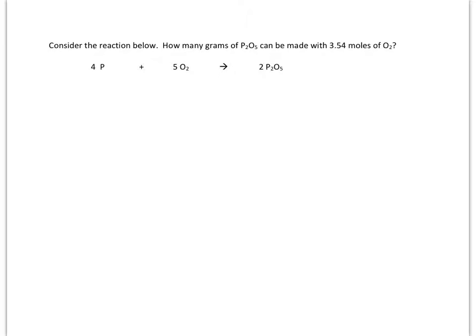So again, the first thing you want to do is map it. So it says, how many grams of P₂O₅ can be made? So we say, where is that? That's P₂O₅. I want this for my final answer. That's where I'm going. With 3.54 moles of O₂. So O₂ is going to be under O₂, but 3.54 doesn't go directly here. This is where grams goes. It goes down here. So I'm going to write 3.54 moles.